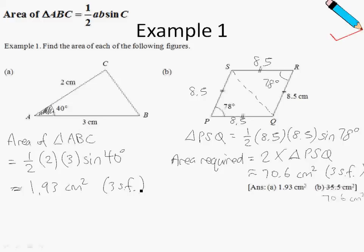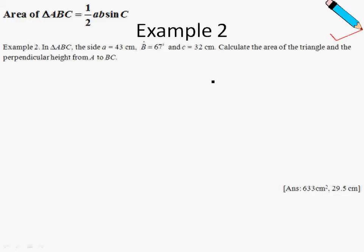Let's move on to the next example. In this example, a diagram is not given, so we'll try to draw the diagram. In triangle ABC, the side A is 43. Let me just draw a triangle. Just label the triangle ABC. Take note that the side that is directly opposite angle A will be called side A, or small letter A. Same for here, this will be B and this will be C. Angle B is given to be 67 degrees, A is given to be 43 cm, and C is given to be 32 cm. Calculate the area of the triangle.